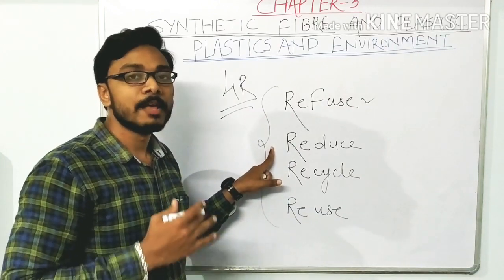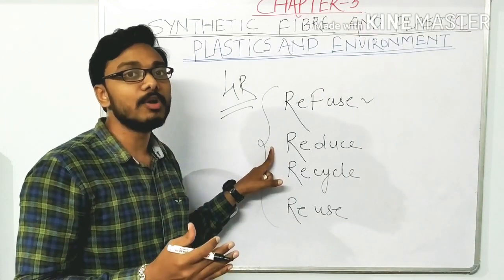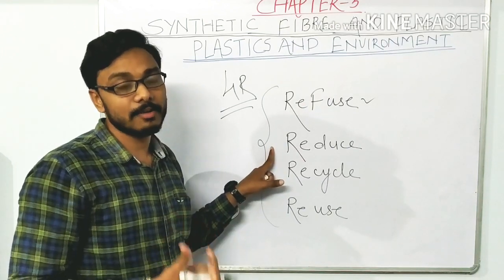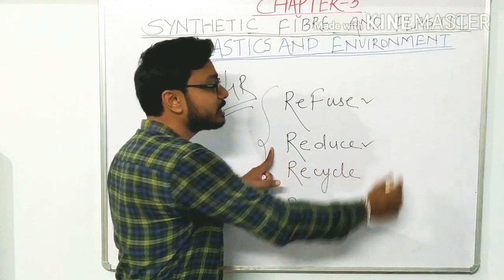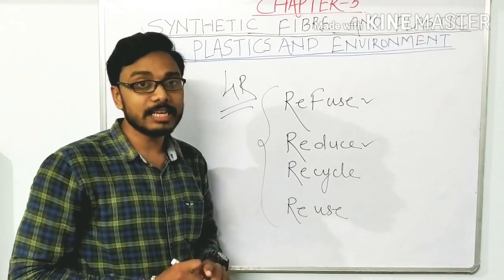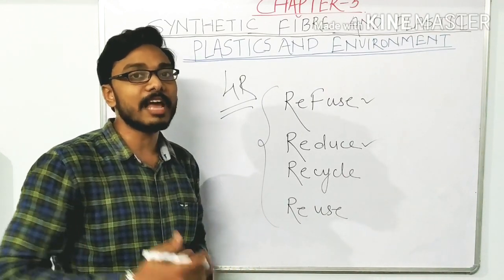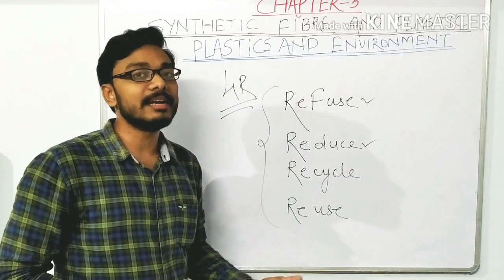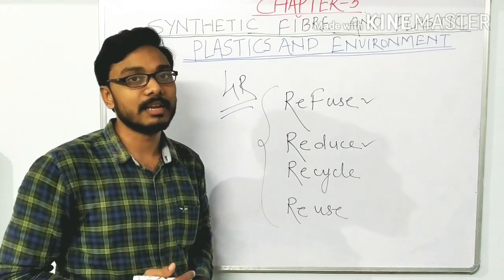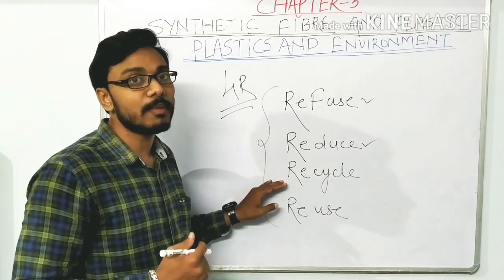The second R is Reduce — reduce the use of plastic. Replace your plastic bottle with a steel bottle and your plastic tiffin box with a steel tiffin box. The third R is Recycle — segregate recyclable plastic materials in the proper bin and give them to the municipal corporation so the same plastic can be used again and again, reducing the introduction of new plastic into our environment.